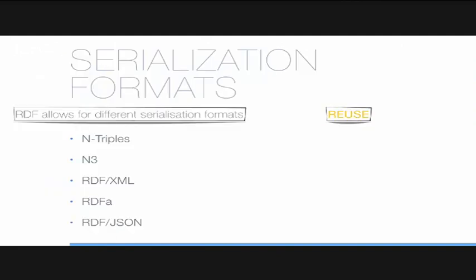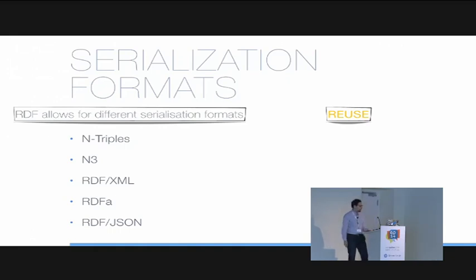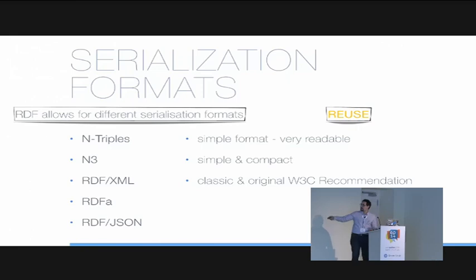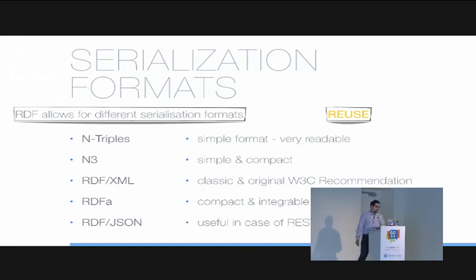RDF allows for very different serialization formats, which are very useful for the reuse of data. They are: N-Triples, N3, RDF/XML, RDFa, and RDF/JSON. N-Triples is the very simple format and is the most human-readable. N3 is simple as well but more compact. RDF/XML is the classical representation and the original W3C recommendation. RDFa is a compact way to represent RDF data and is very integrable with other formats such as XHTML pages. And finally, RDF/JSON is useful in case of RESTful APIs.